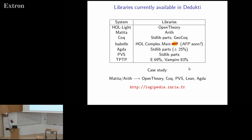Regarding interoperability, to what extent can we translate useful results from one system to another? There have been two case studies. In the first, starting from the Matita arithmetic library, it was translated to OpenTheory (a format used by HOL Lite), to Coq, to PVS, and to Lean. Recently, we also succeeded in translating this to the Agda system. More details are available at logipedia.inria.fr, except the Agda part which is done in different software.